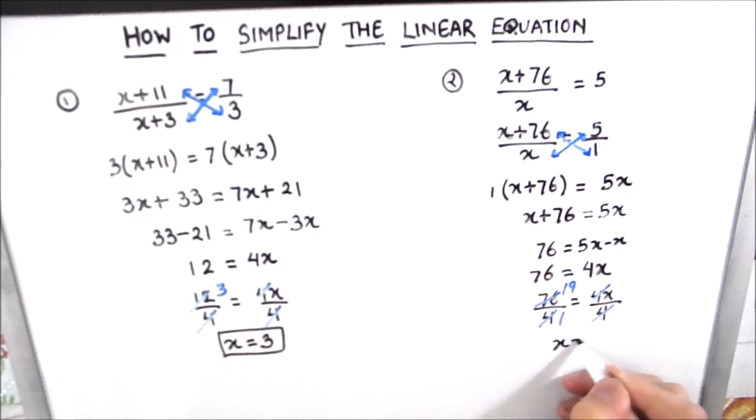So the value of x is equal to 19. This is how you can simplify the linear equation in single variable of this kind.